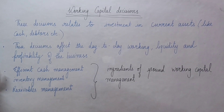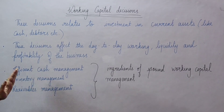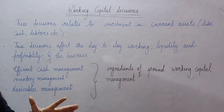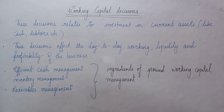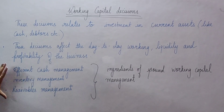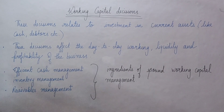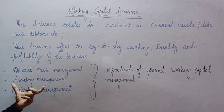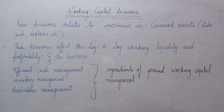These decisions affect the day-to-day working, the liquidity — how much cash is in hand — and the profitability of the business. Students generally ignore these points but they are very important for one-mark objective questions. For sound working capital management, three things must be efficient: cash management, inventory management, and receivables management.